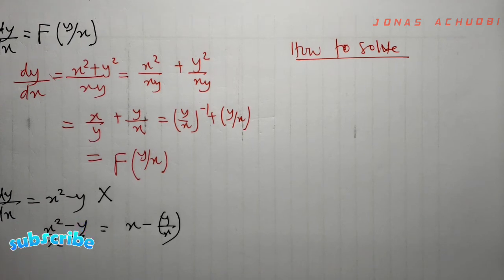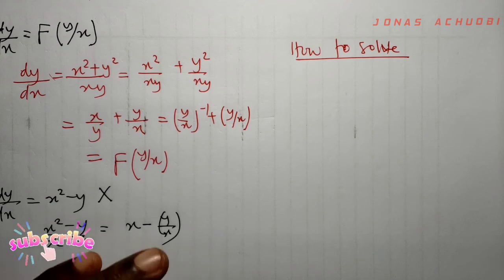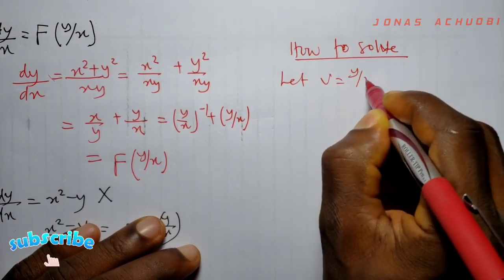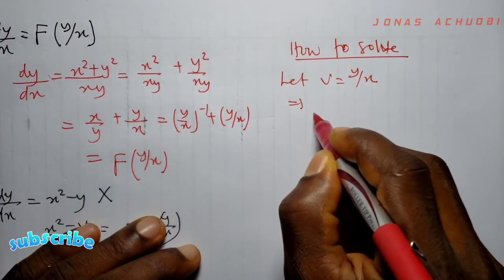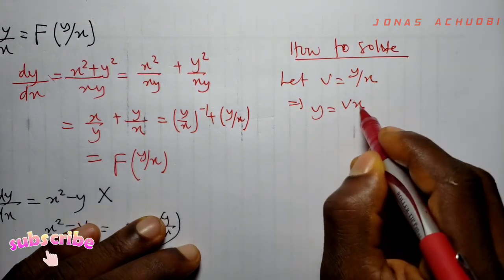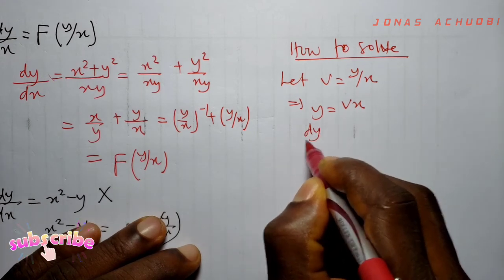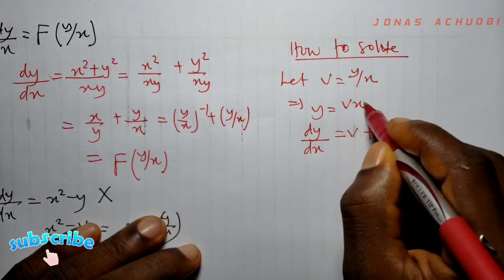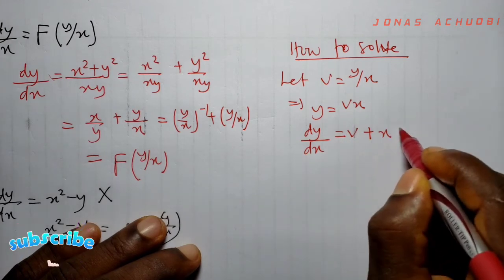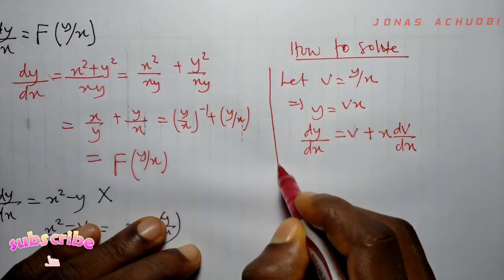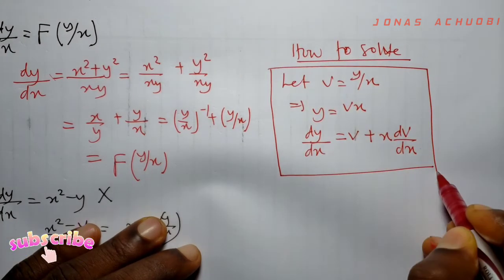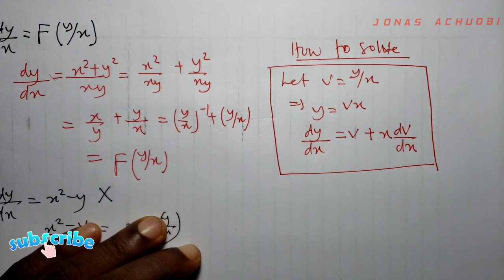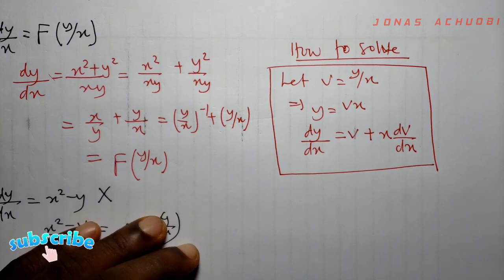The question now is: how do we solve a first-order homogeneous ODE, having verified that the equation is homogeneous? To solve such an equation, we make the following substitutions. Let v = y/x, which means y = vx. Differentiating using the product rule gives dy/dx = v + x · dv/dx. In our next video, we shall solve an example using this method.